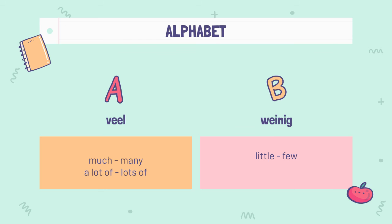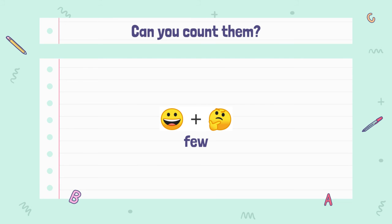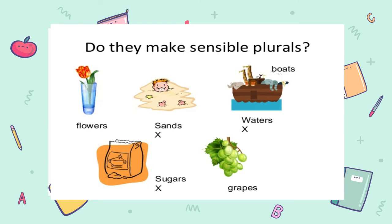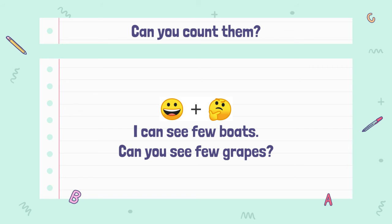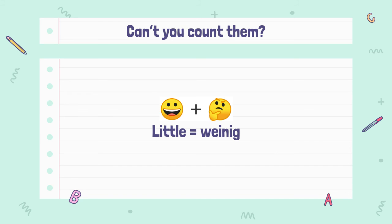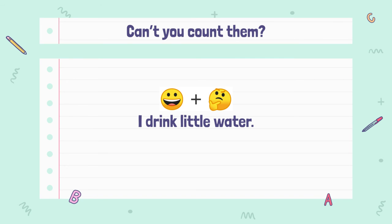Now we go to 'weinig': little and few. Can you count them? Then in a positive sentence and a question, you use few. 'Few' means 'weinig' — try to remember that. So: I can see few boats — 'weinig boten.' Can you see few grapes? If you can't count them, 'little' means 'weinig.' For example: I drink little water. Do you use little sugar? These are positive sentences and questions.